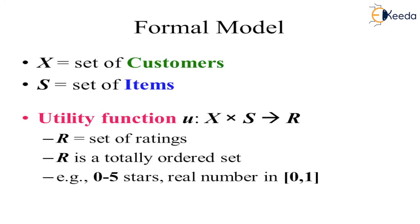What is the formal model for the recommendation system? Suppose we have X as a set of customers and S as a set of items. The utility function works by associating customers with items, and based on that we recommend something. Customers give ratings on items — ratings may be from 0 to 5, or some real number, or binary values like 0 or 1, representing like or not like.